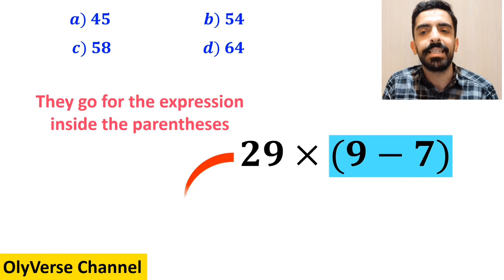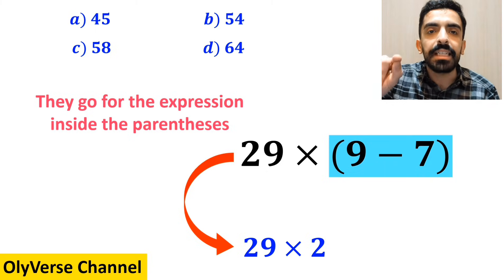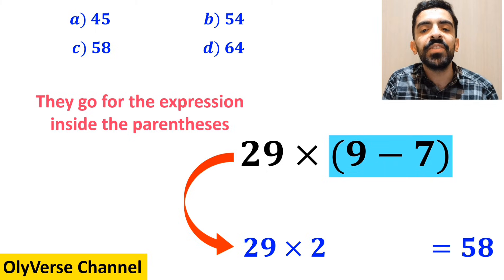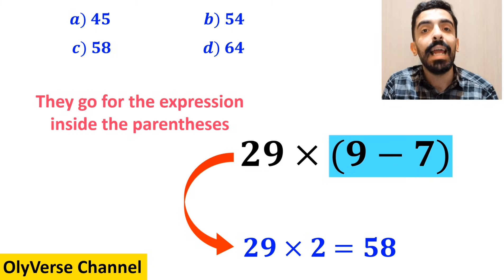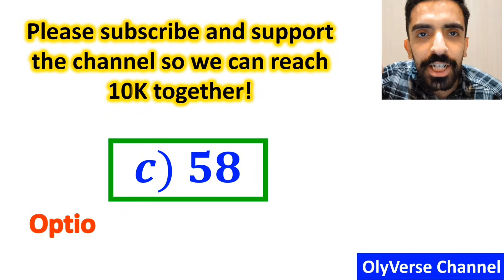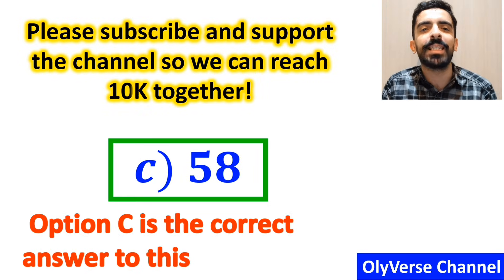And the final step, they go for the expression in the parenthesis and replace it with 29 times 2, which ultimately gives them the answer 58. Without any hesitation, they quickly say that option C is the correct answer to this question.